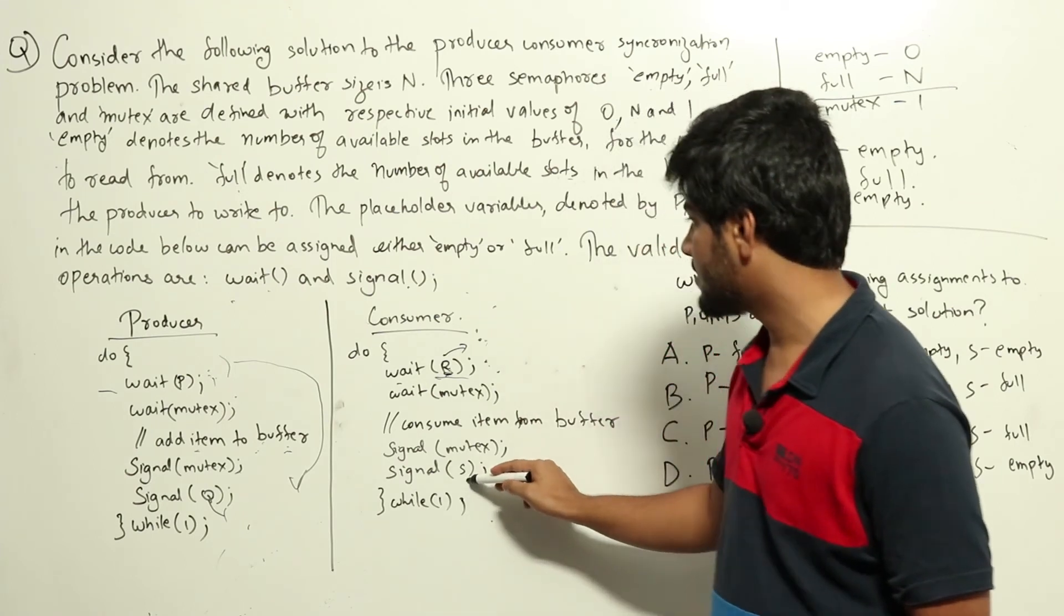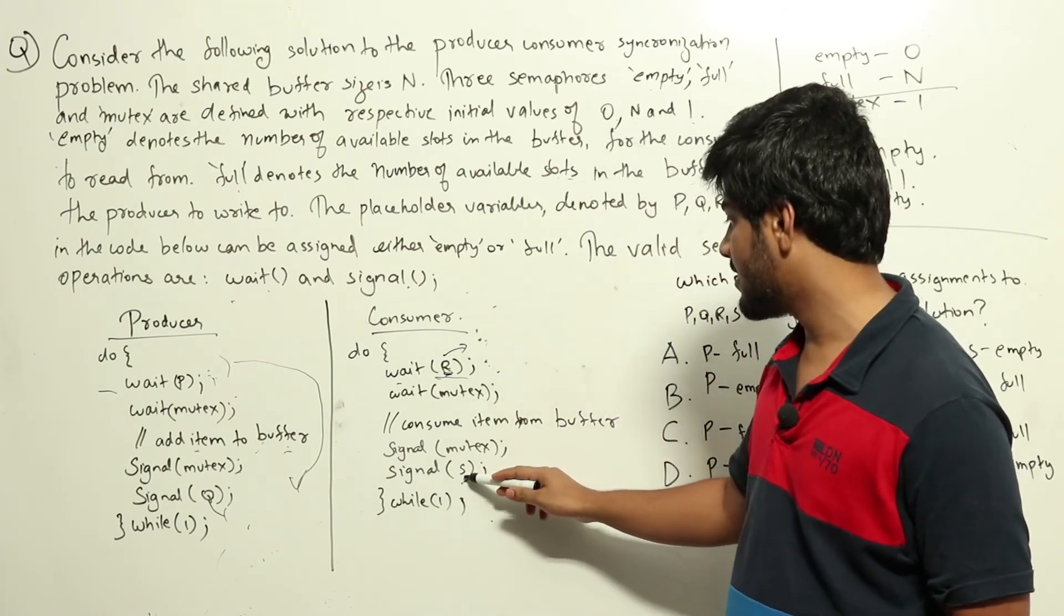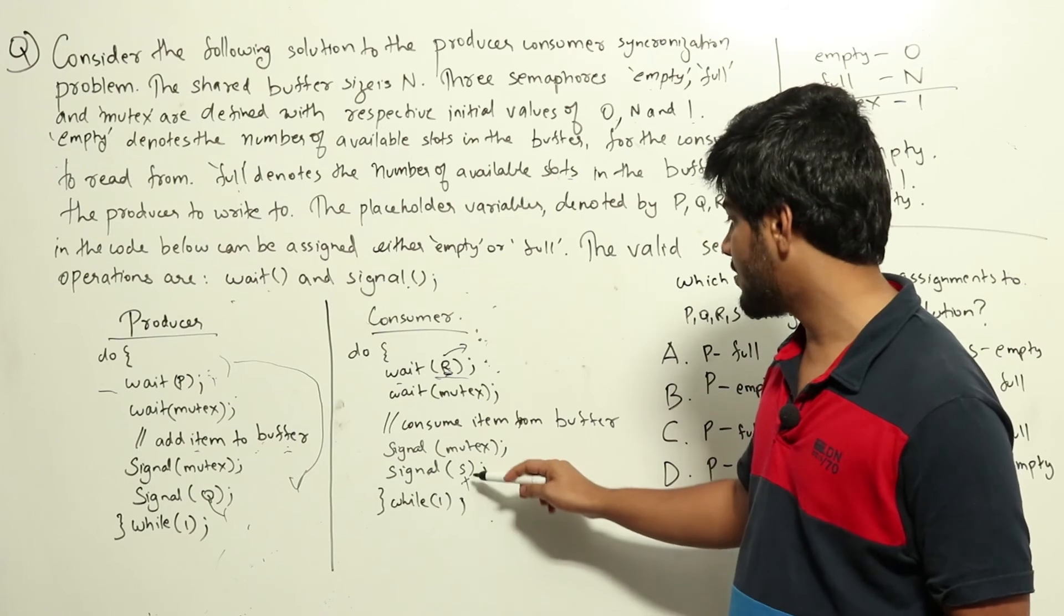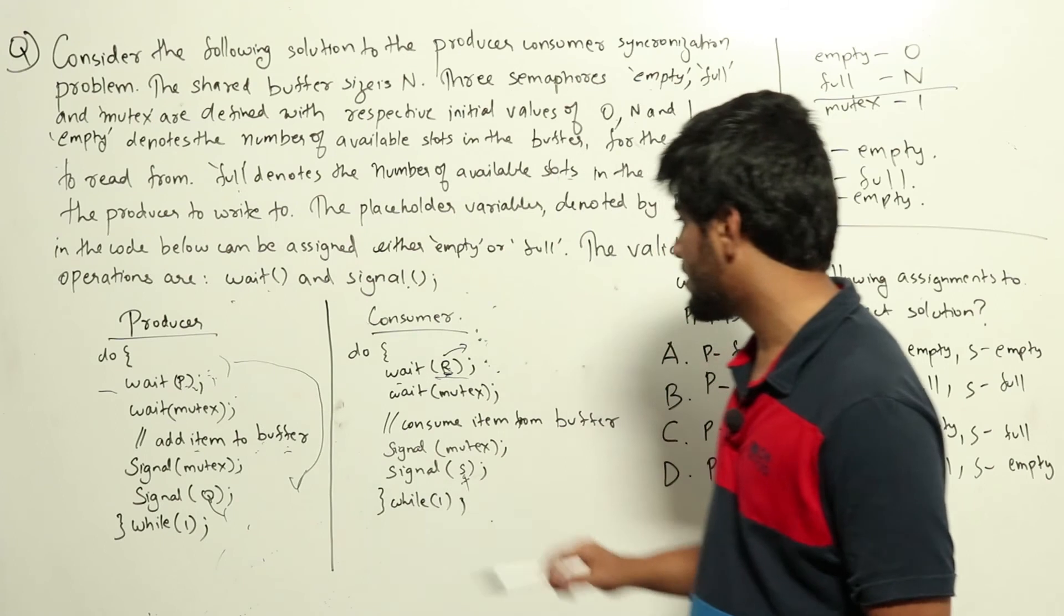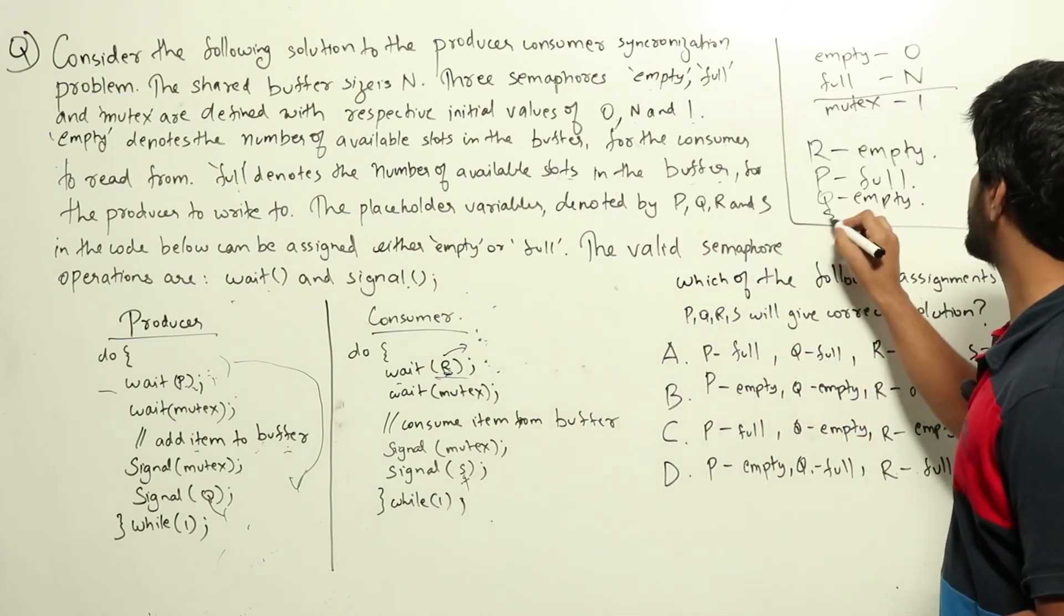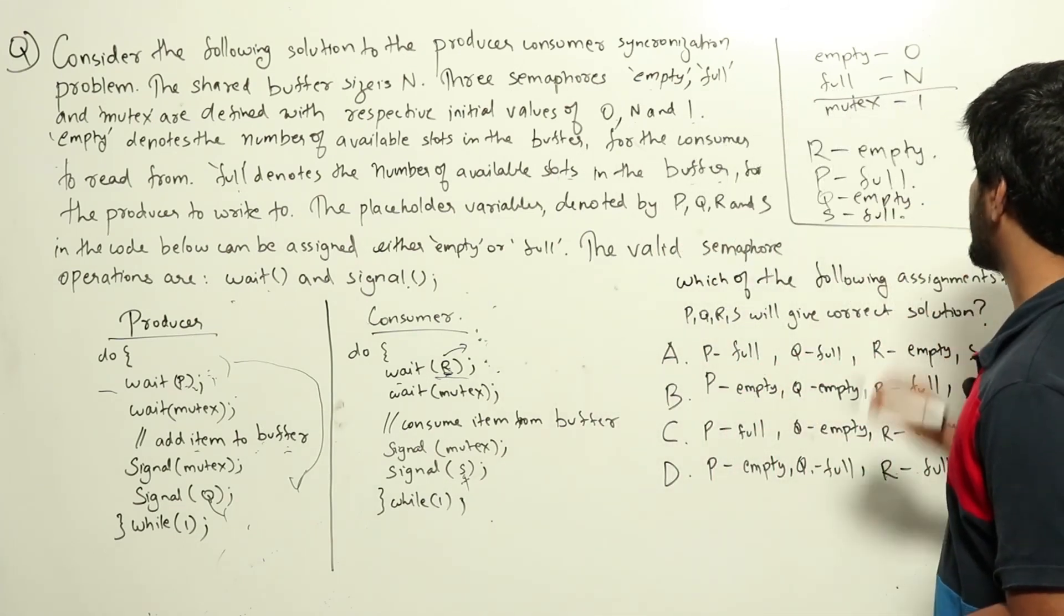Similarly, when we are signaling S, that means we have already consumed something. We need to free up one slot. After that, wait can run. So whatever is P should be S here. So S will be full.